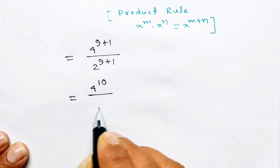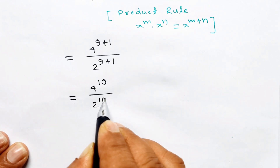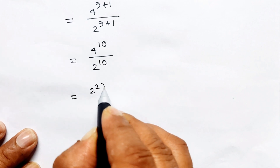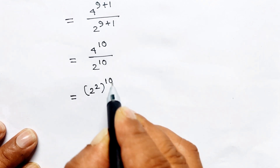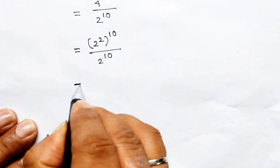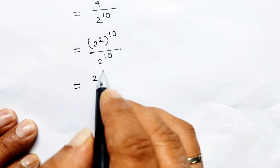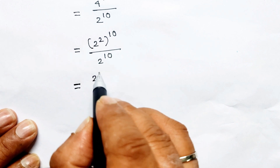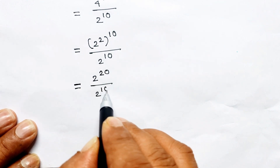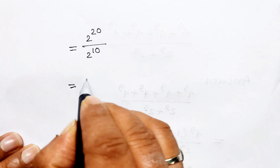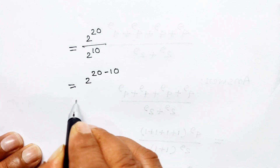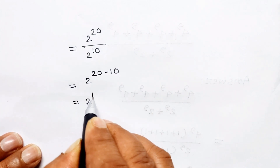This equals 4 to the power 10 divided by 2 to the power 10. Now 4 equals 2 squared, so this becomes 2 squared to the power 10, divided by 2 to the power 10, which equals 2 to the power 20 divided by 2 to the power 10, equal to 2 to the power 20 minus 10, equal to 2 to the power 10.